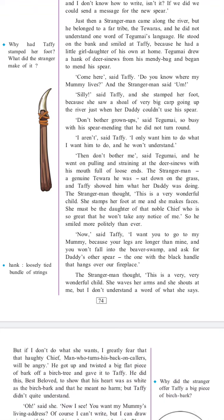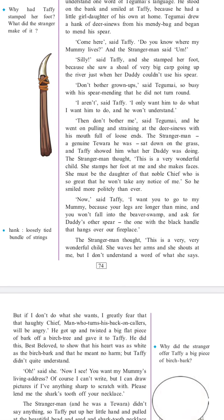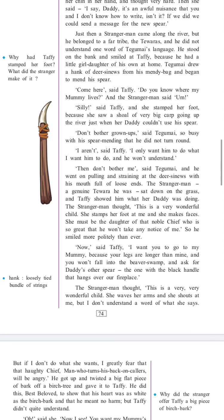The stranger man, a genuine Tewara he was, sat down on the grass and Taffi showed him what her daddy was doing. The stranger man thought, 'This is a very wonderful child. She stamps her foot at me and she makes faces. She must be the daughter of that noble chief who is so great that he won't take any notice of me.' So he smiled more politely than ever. 'Now,' said Taffi, 'I want you to go to my mummy because your legs are longer than mine and you won't fall into the beaver's swamp. And ask for daddy's other spear, the one with the black handle that hangs over our fireplace.' The stranger man thought, 'This is a very, very wonderful child. She waves her arms and she shouts at me but I don't understand a word of what she says.'